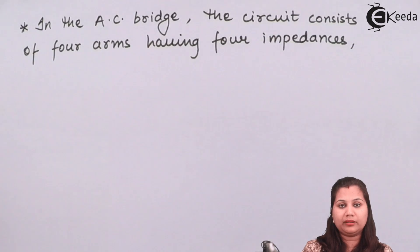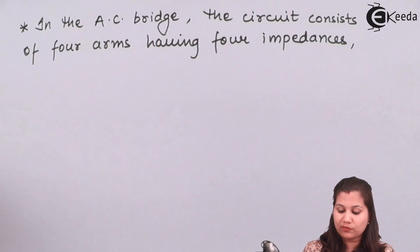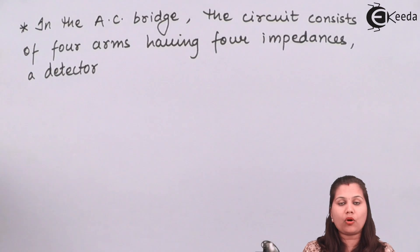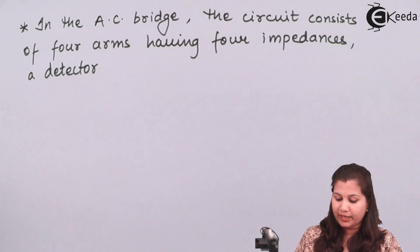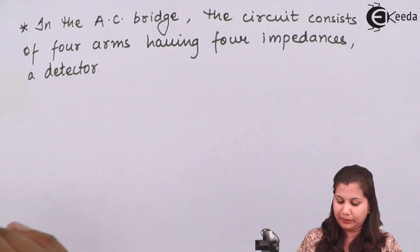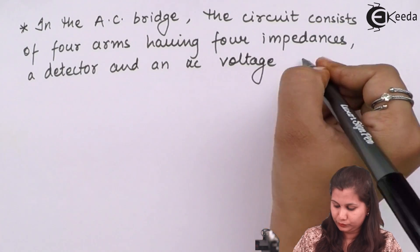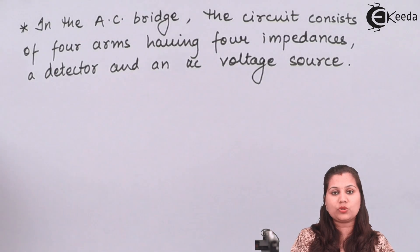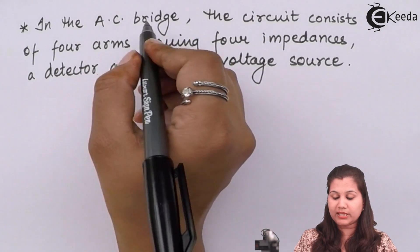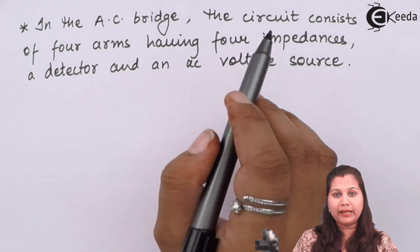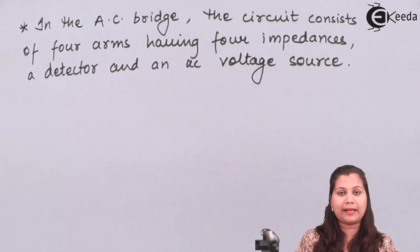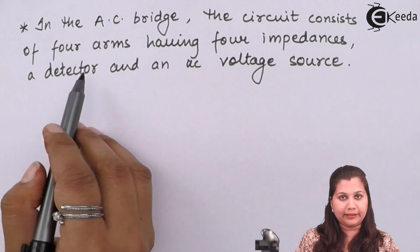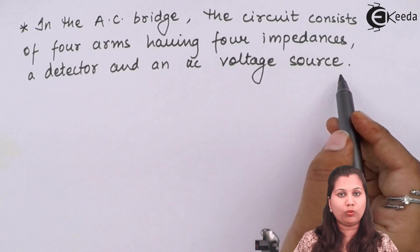Instead of the galvanometer in the Wheatstone bridge, in the AC bridges we will have a detector. And in place of the battery providing the power supply, here we will have an AC voltage power supply. So the difference between the Wheatstone bridge and an AC bridge is: Wheatstone bridge has four resistances; AC bridges have four impedances, which are combinations of resistance, capacitance, and inductance. Instead of the galvanometer, we have a detector, and instead of the battery, we have an AC voltage source.